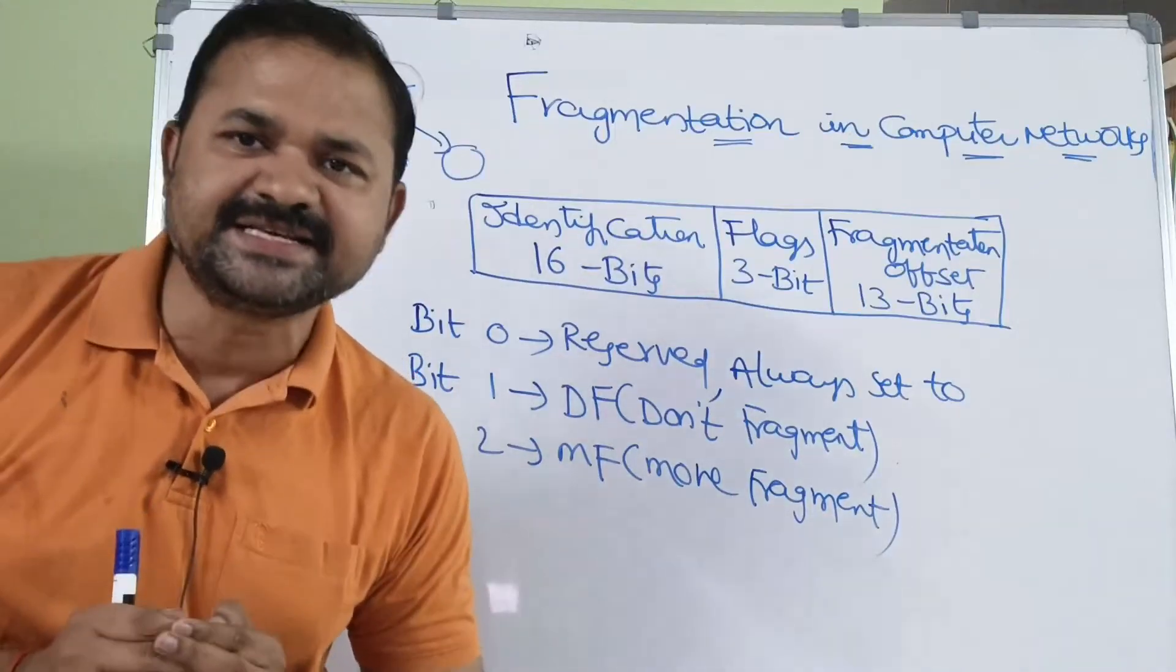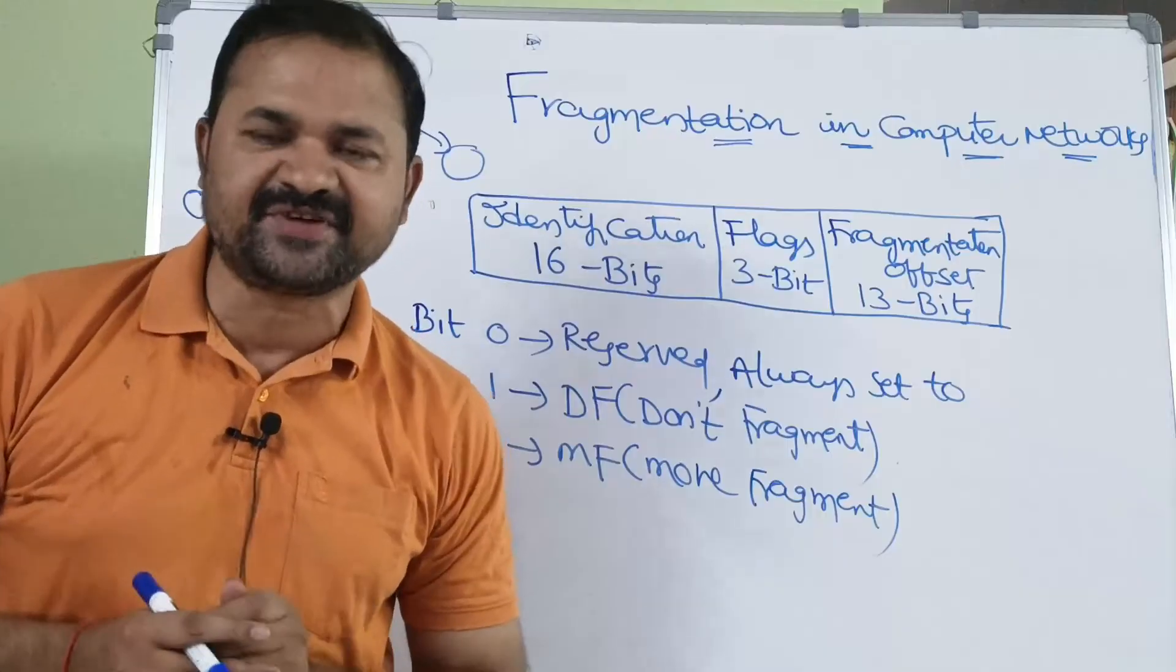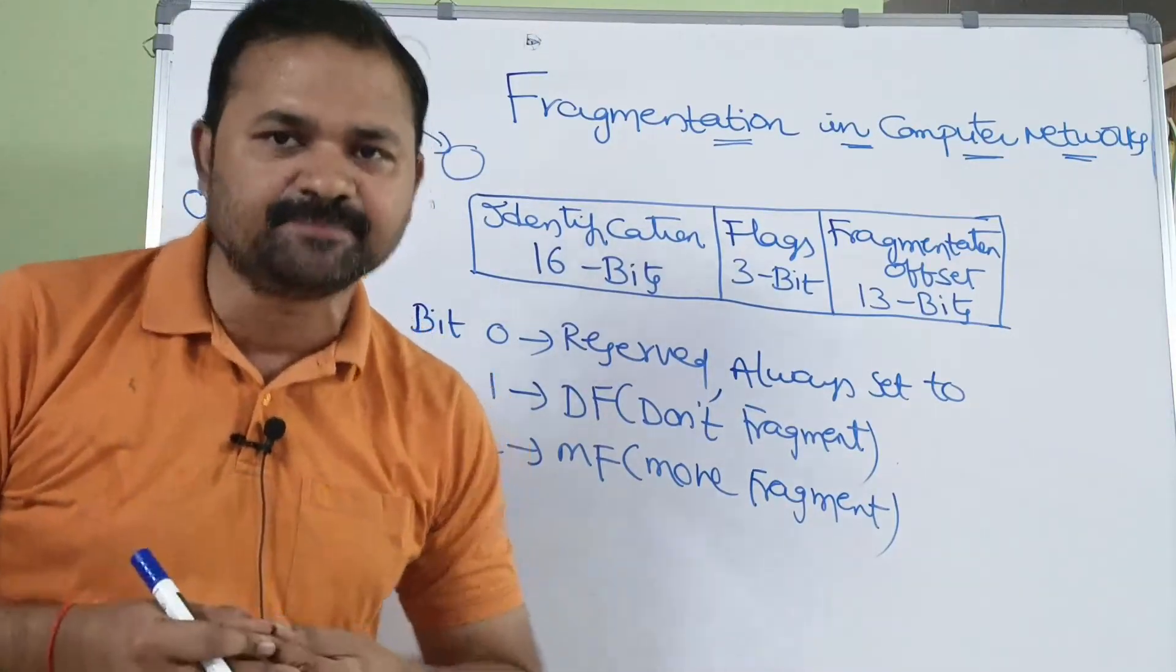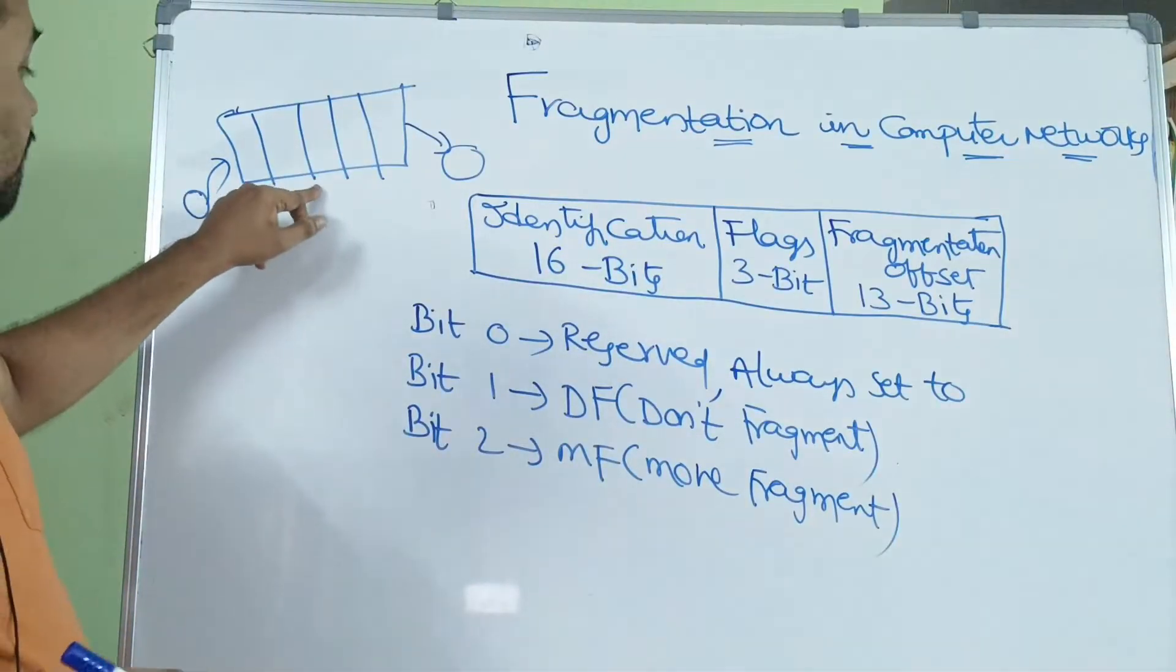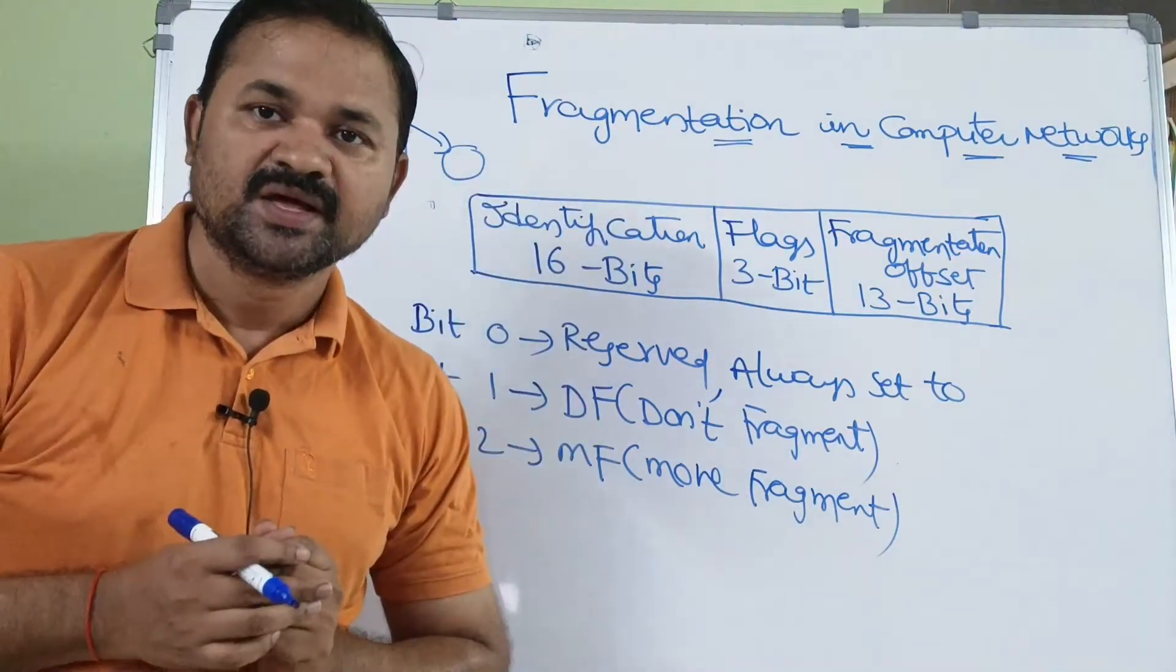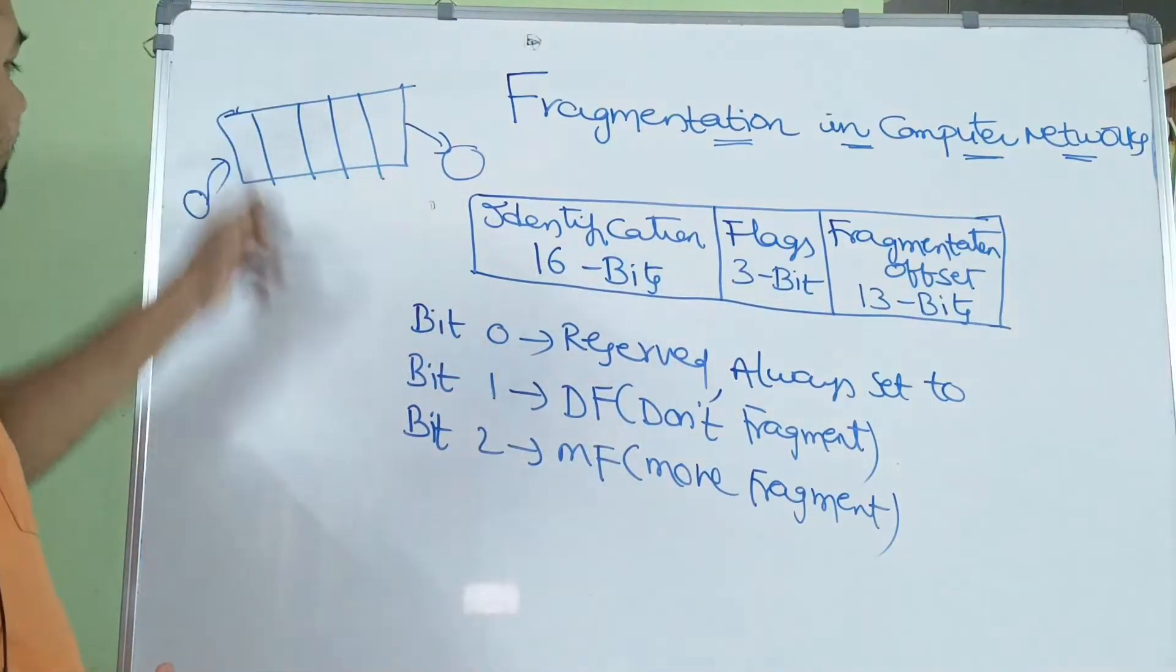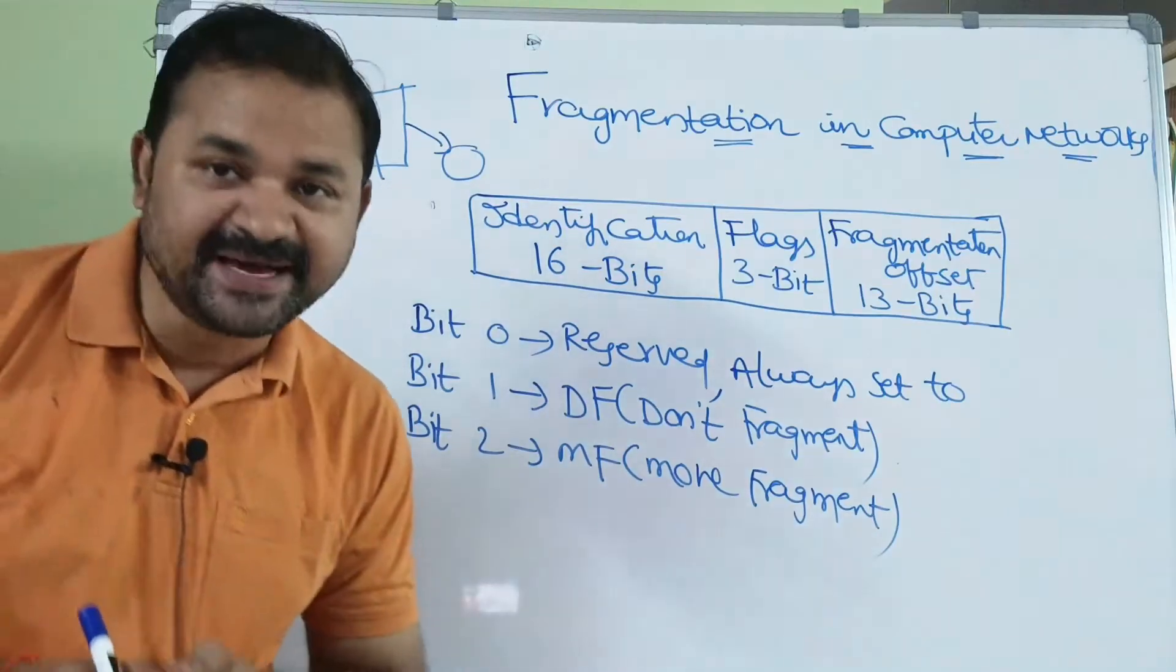Now, let us discuss fragmentation in computer networks. Fragmentation is mainly needed when the source machine wants to send a large packet to the destination machine. If we have a large packet, then that packet will be divided into various fragments.